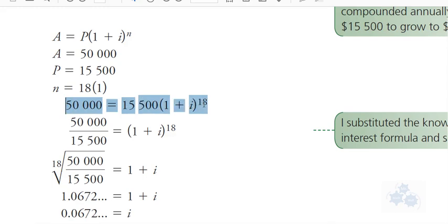But if you're given A and you're given P and you're given n, and you have to solve for i, you're going to end up with an equation that looks like this, where the i is missing. Okay. Now, the tricky part is with this 18 here. So you get rid of the 15,500 first. You divide both sides. Okay. By that, like they did over here. And then you're left with this part.